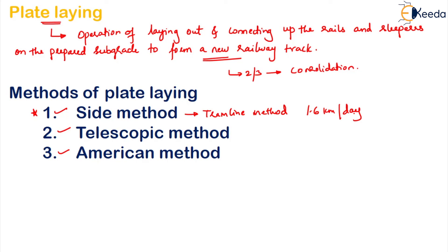The telescopic method is extensively used in India. Here, materials are transported in material trains from the depot to the work site using the same newly constructed track length, like moving a telescope outward to bring a far object into focus. This method is carried out by three gangs: material gangs bring the materials, linking gangs fix the rails and sleepers, and packing gangs correct the levels and alignments.